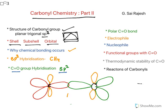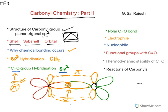The overlap of the carbon and oxygen sp2 hybrid orbitals results in a σ (sigma) bond, whereas the sideways overlap of the unhybridized p orbitals results in a π (pi) bond. So the double bond consists of one sigma bond and one pi bond. Sigma is a stronger bond due to direct overlap, whereas pi is a weaker bond because it is only a sideways overlap.